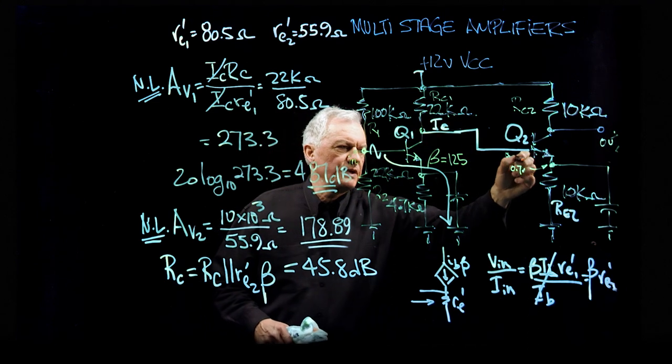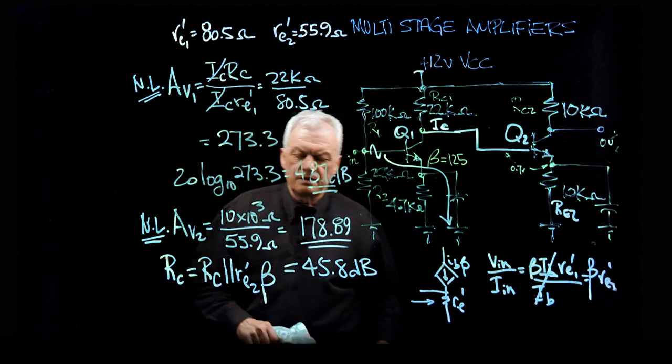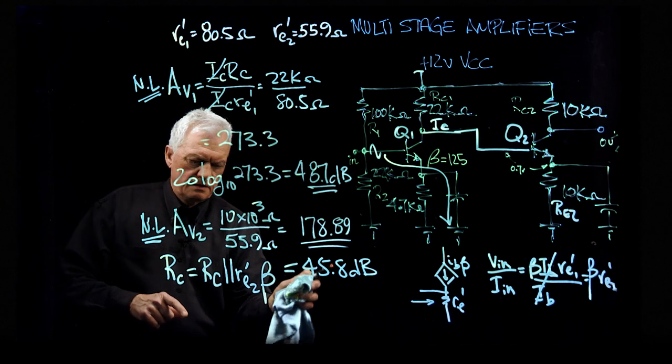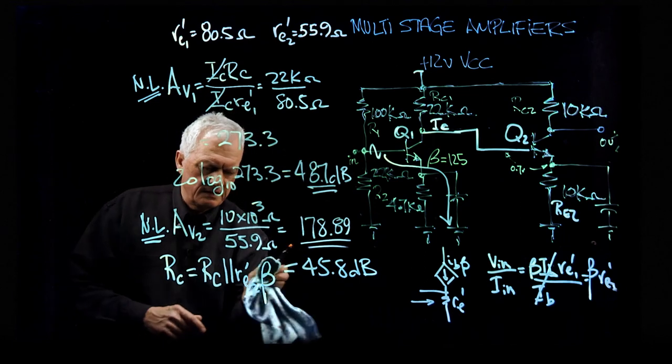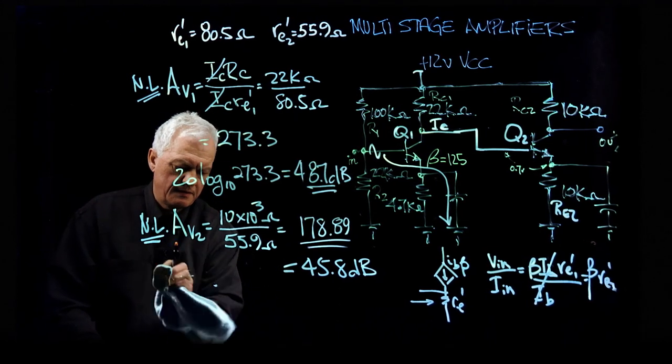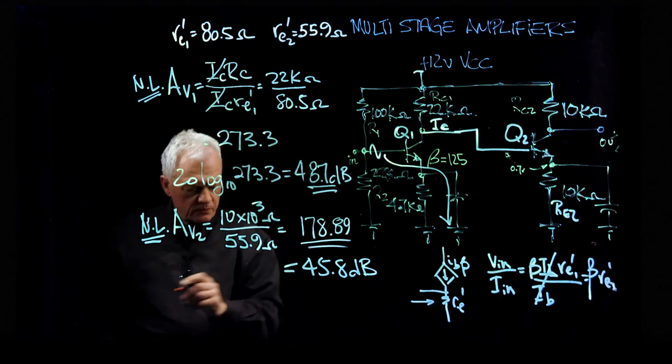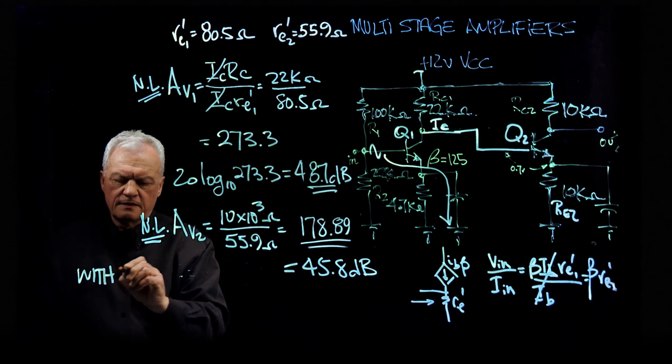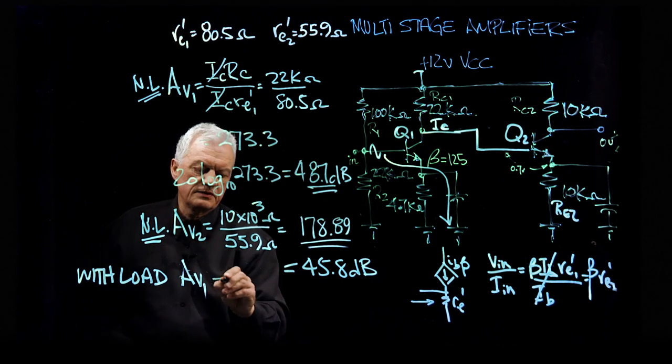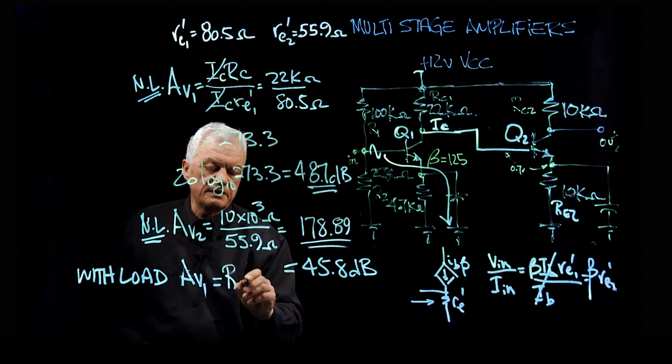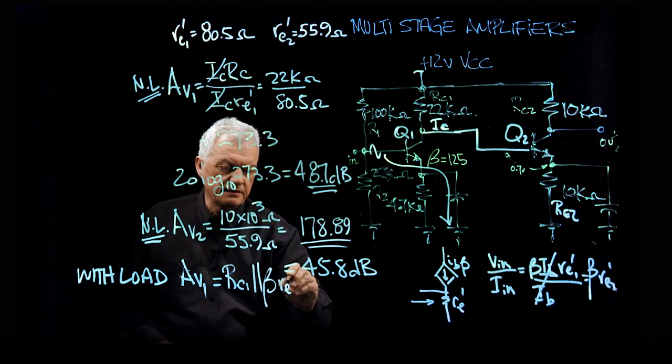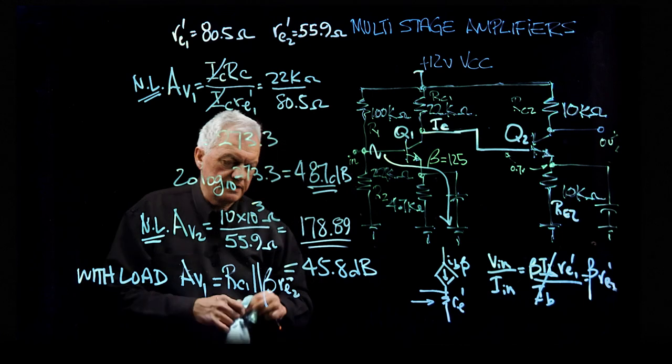So we are actually in parallel: 22K is in parallel with beta 125 times the value of RE2. So with the load, the gain for AV1 is going to equal r small c, which is RC1 here in parallel with beta RE2 prime.